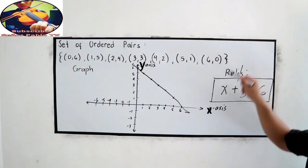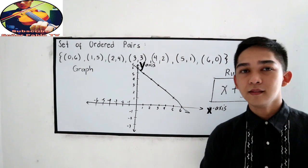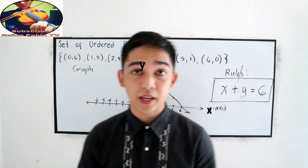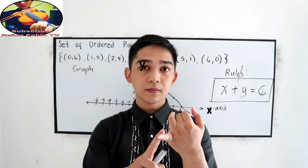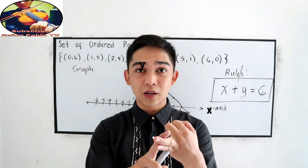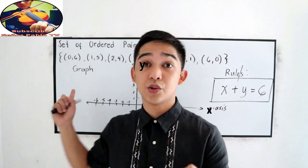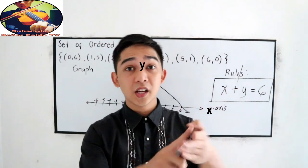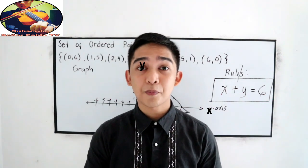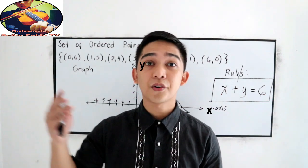So, this is our relation. Those are the four ways to represent our relations. First, the table of values. Second, the mapping or arrow diagram. Third, using the graph. And fourth, using the rule. Thank you for watching.